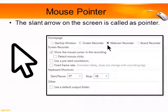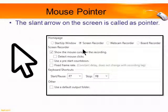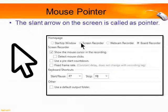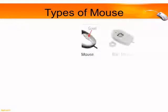The slant arrow on the screen is called the mouse pointer. As we move the mouse, the pointer on the monitor also moves in the same direction. You can see on the screen the pointer moving.